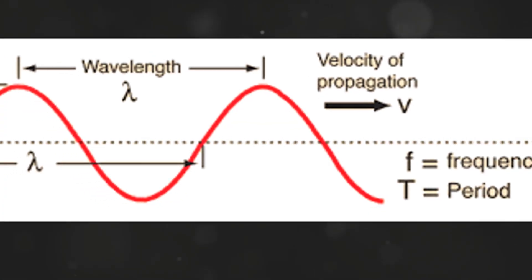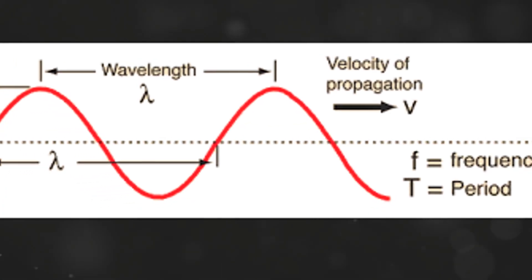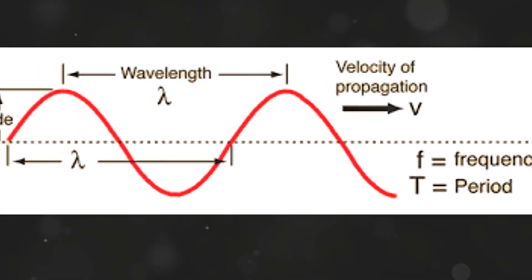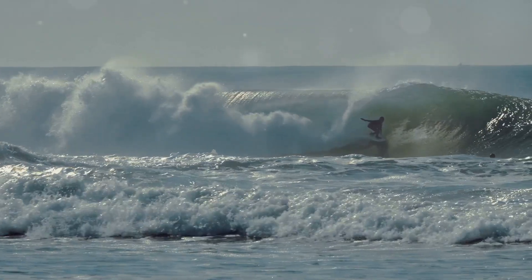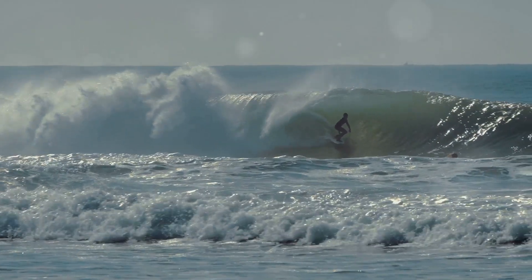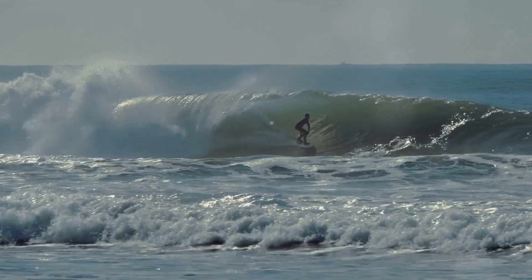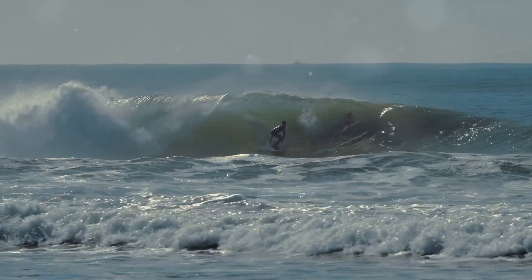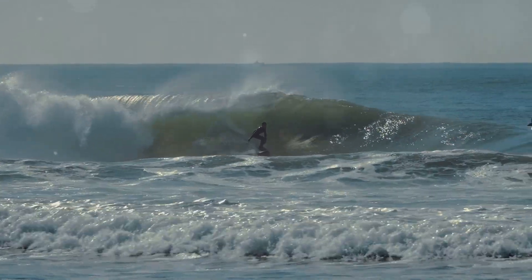Next, wavelength is the distance between two crests of a wave. Imagine you're at the beach — the distance between the top of one wave and the next is the wavelength.